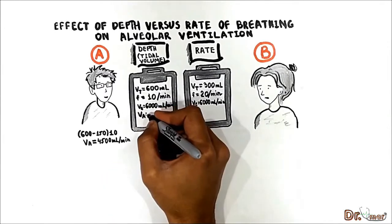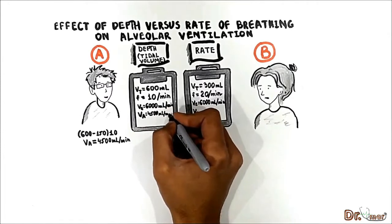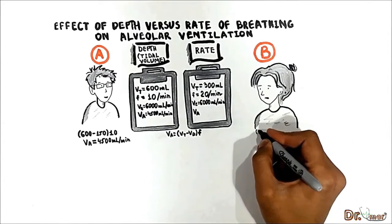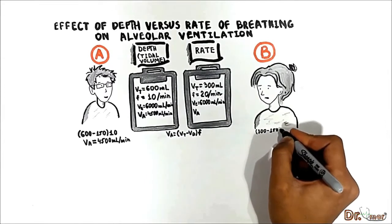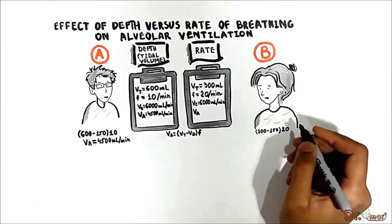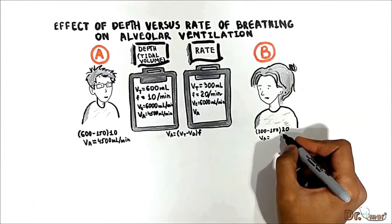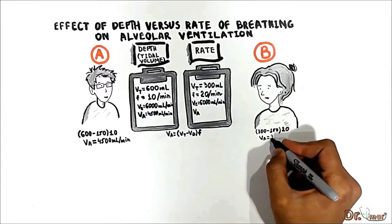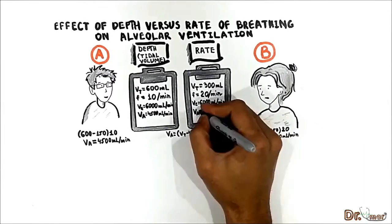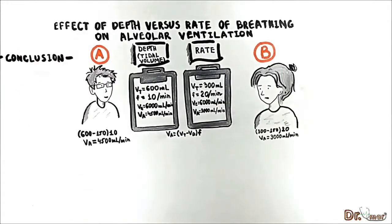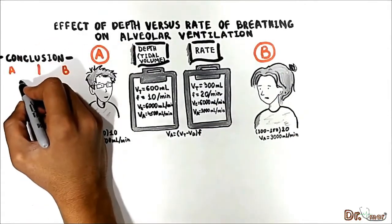Patient B has a tidal volume of 300 mL. So 300 mL minus 150 mL — the dead space — equals 150 mL, times the respiratory rate of 20 per minute, gives us 3,000 mL per minute. This is the alveolar ventilation of Patient B. The total ventilation in both patients is equal at 6,000 mL per minute.